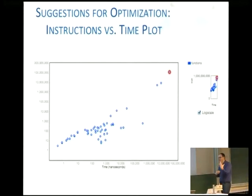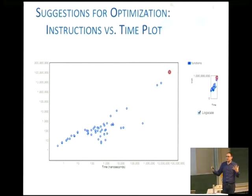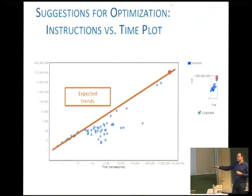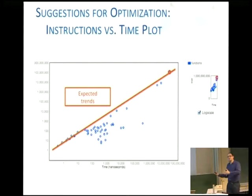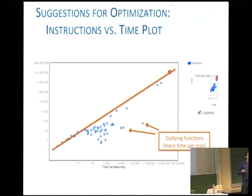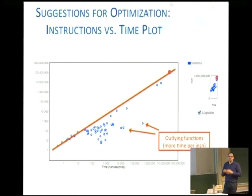We also have a little bit more experimental research. The idea is: how can we analyze the entire application in a more straightforward way to understand what's going wrong? On the x-axis is time and on the y-axis is number of instructions. You'd expect linear behavior, but there are outliers — meaning you're spending more time in some functions compared to others. These are the functions where you'd want to spend some time to investigate and do some research.